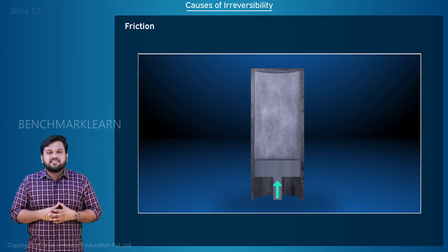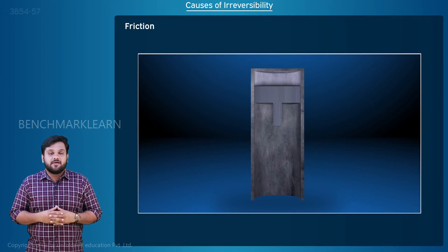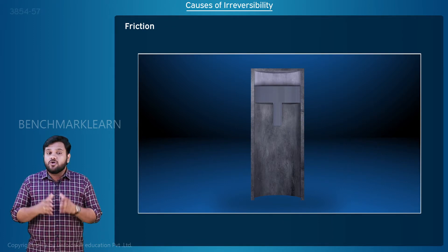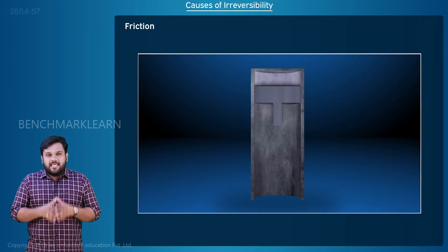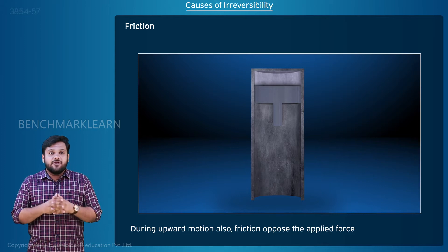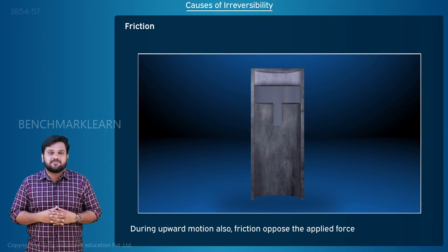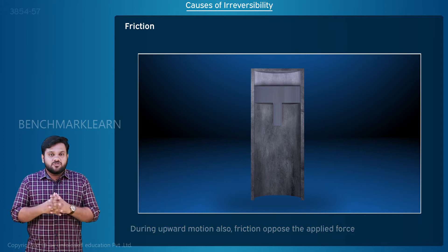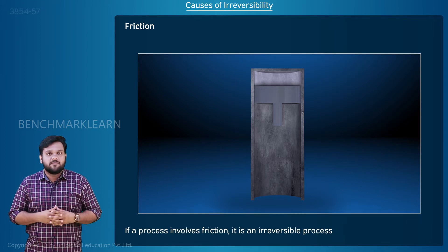When the motion of the piston is reversed, the bodies are restored to their initial position, but neither does the interface cool down nor is the heat released converted back to work. Instead, the interface heats up again due to the frictional resistance to the upward motion of the piston. So if a process involves friction, it is an irreversible process.